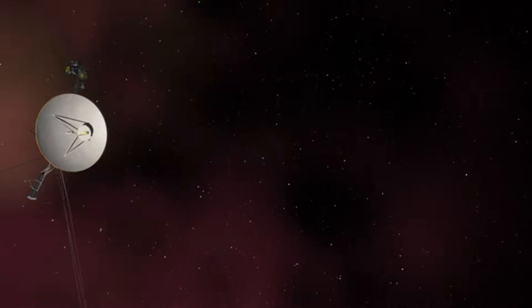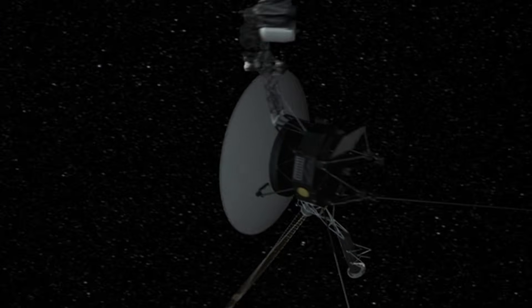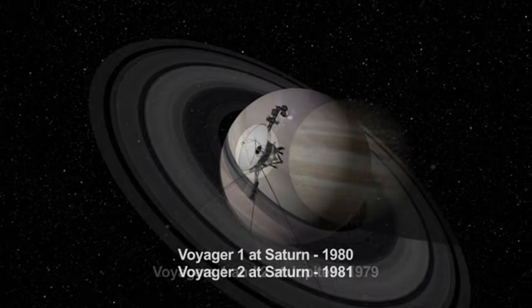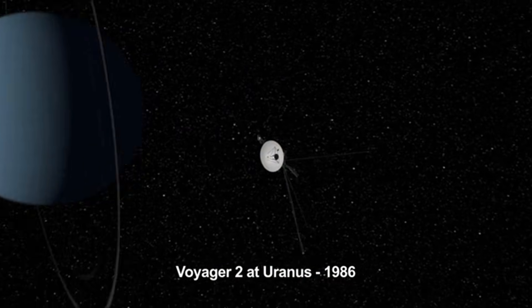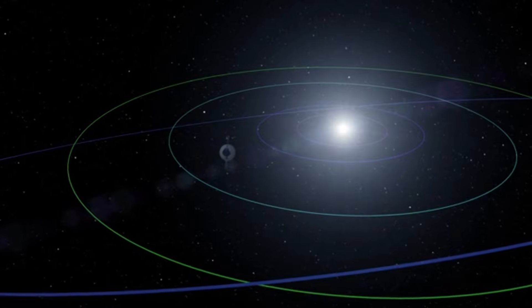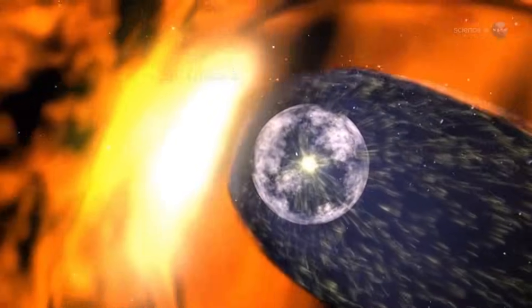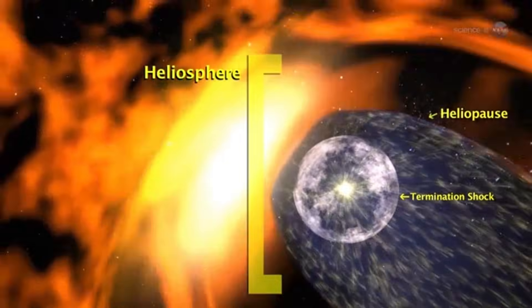On February 14th, 1990, Voyager 1 was almost 6 billion kilometers, 3.7 billion miles from home, a distance so great that the sun simply glimmers like a bright star in the night sky. The spacecraft was never designed to look back. Its cameras were built for close-up views of giant planets, not for photographing tiny distant points of light lost in solar glare. But as Voyager drifted farther away, the famous astronomer Carl Sagan proposed a bold idea to NASA. Could we capture a portrait of the solar system from the outside looking in? It's one of those ideas that sounds simple, until you try to do it. No one knew if it was even possible.